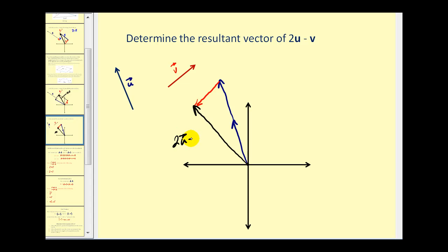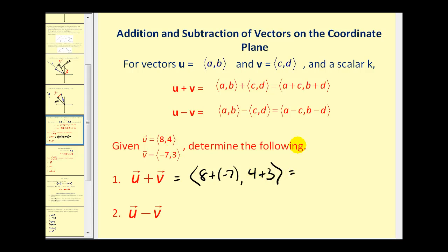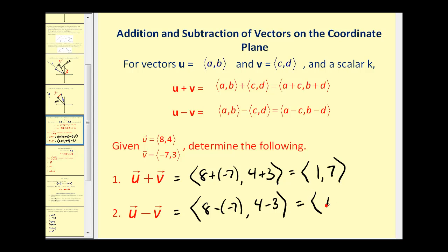The addition and subtraction of vectors in component form is actually very straightforward. To add two vectors in component form, you just add the horizontal components and add the vertical components. For subtraction, you subtract the horizontal components and subtract the vertical components. If we have these two vectors and want to find their sum, we would have 8 plus negative 7, and 4 plus 3, giving us the vector ⟨1, 7⟩. For subtraction, we have 8 minus negative 7, and 4 minus 3, giving us the vector ⟨15, 1⟩.